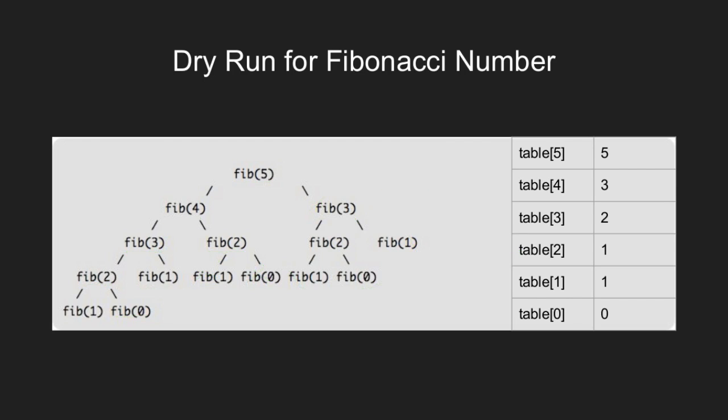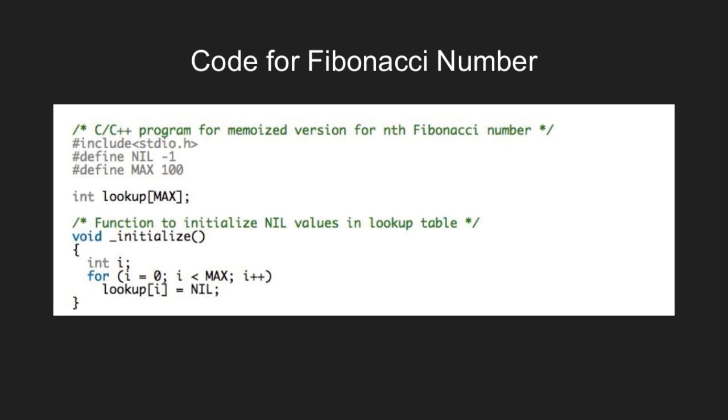Let's now move to the C code. This is our lookup table. And in this method, we initialize all the values of the lookup table as nil.